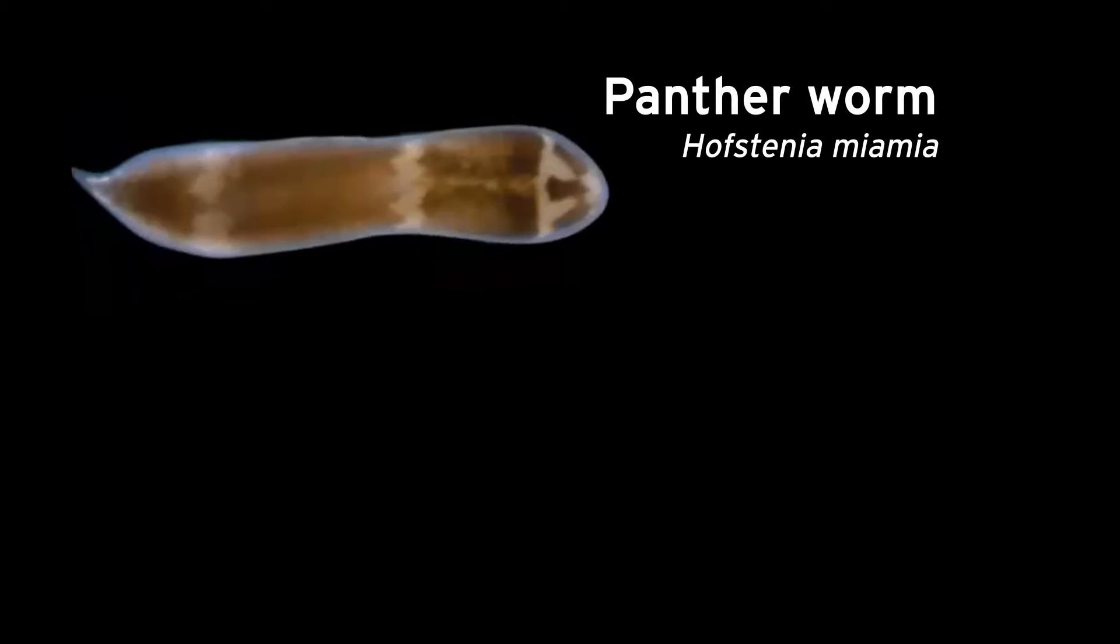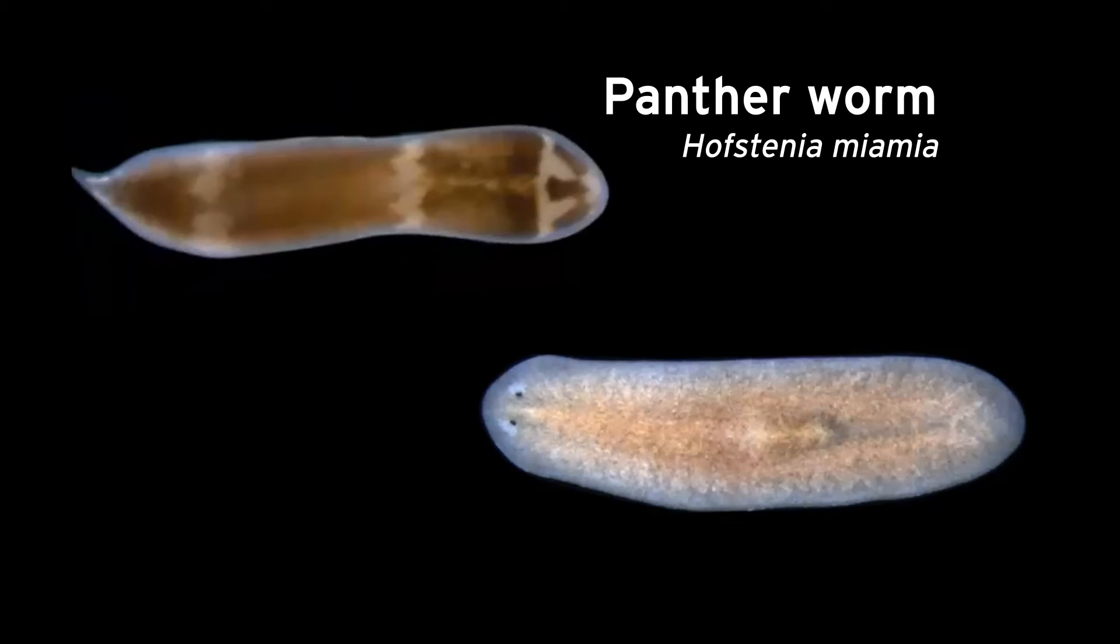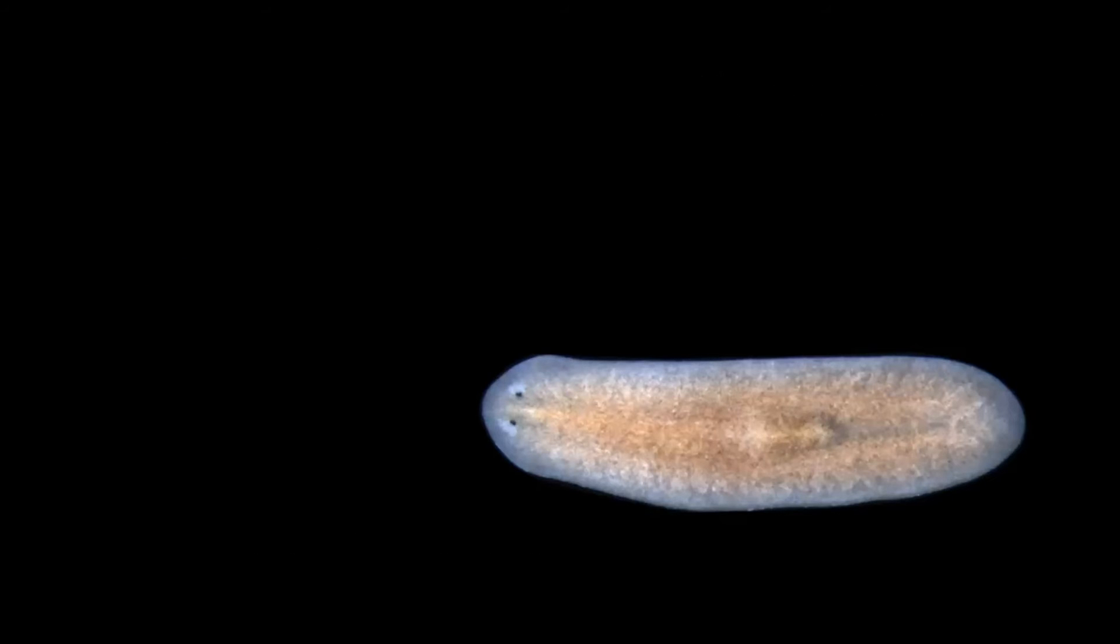These worms are called the panther worm. I also worked on another type of worm which is called a planarian flatworm and they have these cute little googly eyes and their scientific name is Schmidtea mediterranea. Just like the panther worm when you cut them up they can fully regenerate all of their pieces which is really amazing.